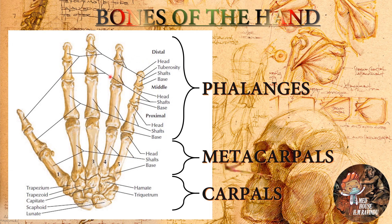There are eight carpal bones: the scaphoid, lunate, triquetrum, and pisiform — a small bone after the triquetrum — then the trapezium, trapezoid, capitate, and hamate.